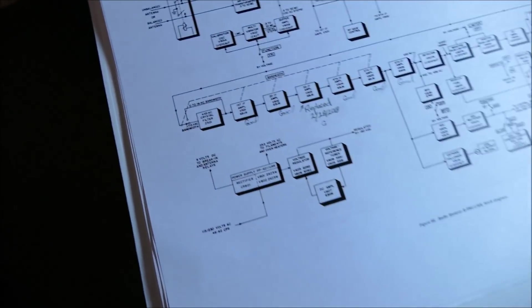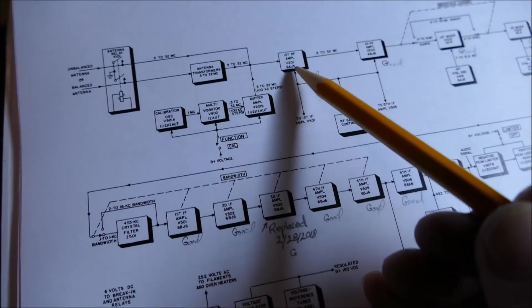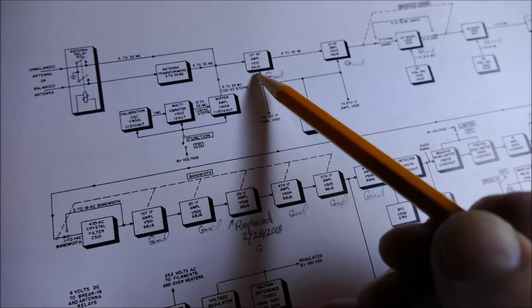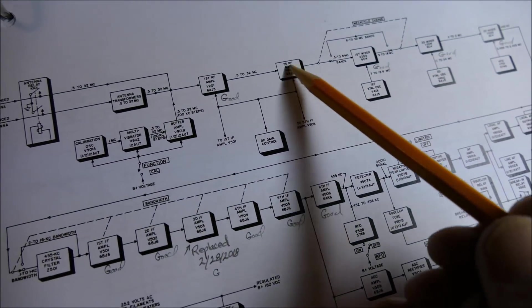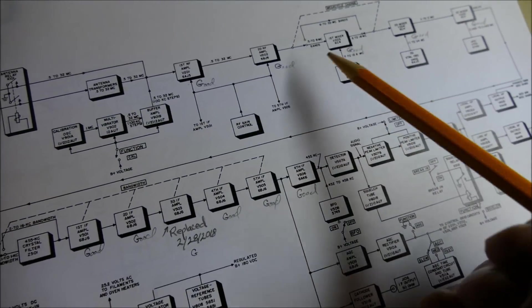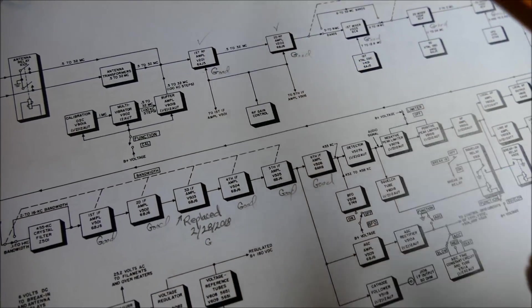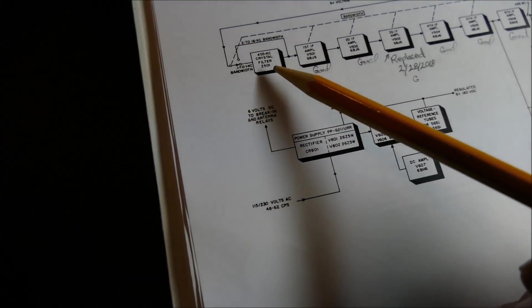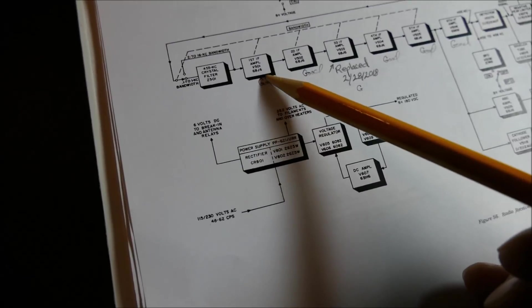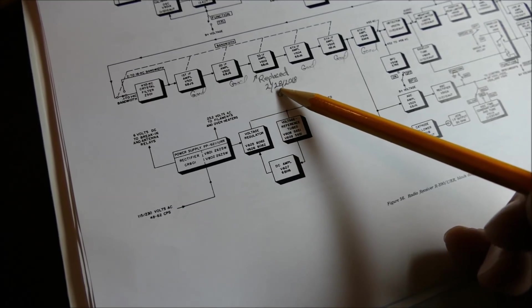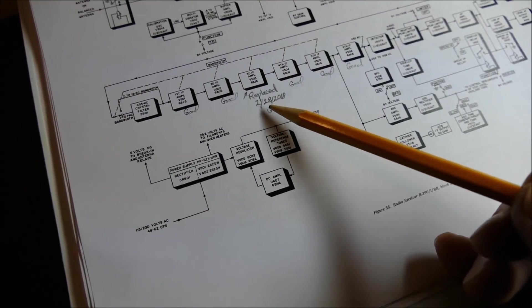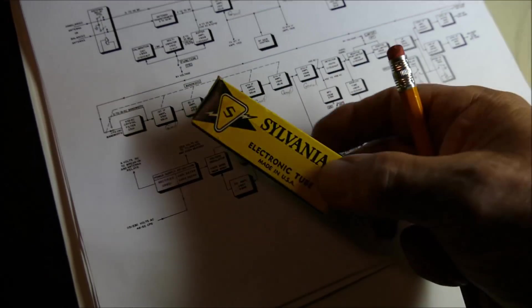Let's look at the schematic and see why I have that strategy. There's the first RF amplifier, the 6AJ5. I've written 'good' on it. There's the second one, and there's the 6C4 mixer tubes. Then you come down here to the IF stages - first IF amplifier, second, third. This is the one I replaced on February 28th because it wasn't working right.